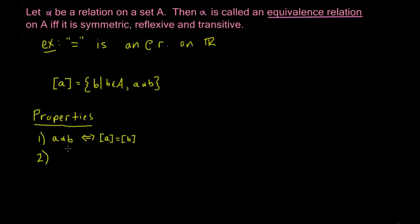The second property: if A is an element of the equivalence class generated by B, then that's the same thing as saying the equivalence class generated by A is equal to the equivalence class generated by B. We know that we can use any element in the equivalence class as a representative. So if A is an element of the equivalence class generated by B, then the equivalence class generated by A is the same as that generated by B — they're the same equivalence class.